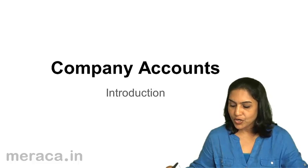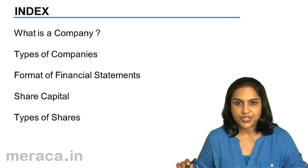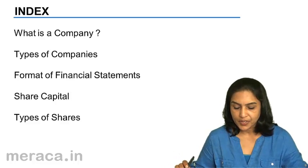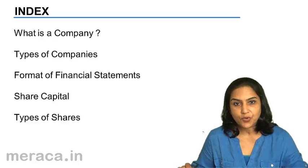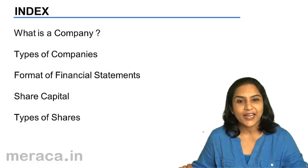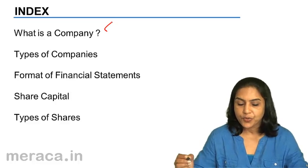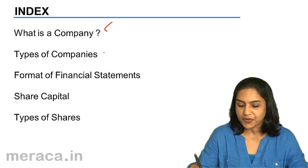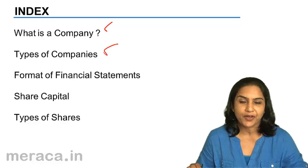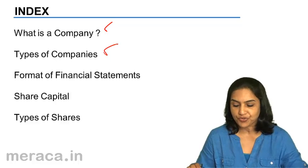The course of our discussion is structured as below. First, we shall understand what is a company and what kind of business structure is a company. Next, we will discuss the various types of companies — whether they are public, private, holding, subsidiary, government, statutory, etc.